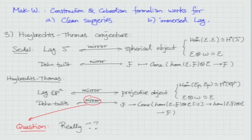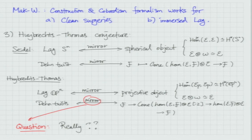Under the philosophy of mirror symmetry, there should be this sort of mirror correspondence. Seidel's result is this: the Dehn twist tau_S^n L is quasi-isomorphic to the cone of Hom(S^n, L) tensor S^n to L. This is Seidel's result. If you compare this expression to the algebraic expression, it's exactly the mirror.